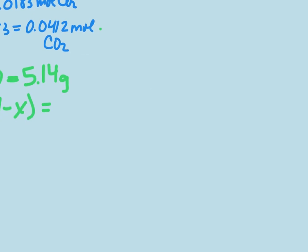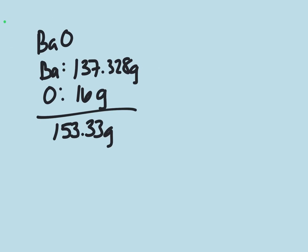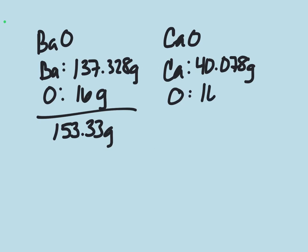First we want to find out what is the molar mass for each one of these compounds. So for barium oxide, we're going to be adding barium, which equals 137.328 grams per mole. Oxygen is 16 grams per mole. So barium oxide has a molar mass of 153.33 grams. And then calcium oxide, calcium has a molar mass of 40.078 grams, and again, oxygen is 16 grams. So calcium oxide has a molar mass of 56.078 grams.